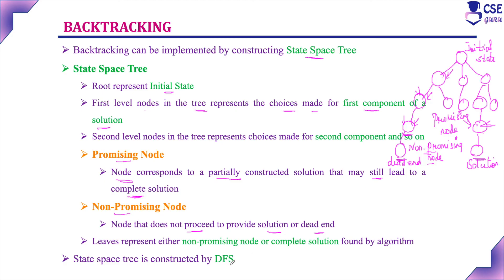The state space tree is constructed using depth-first search, DFS. With the partially constructed solution, it tries to provide the next depth-level node, considering the next level component downward. If it reaches a dead end, it backtracks to the previous level and considers other possibilities. From any node, we consider its next level components; if a dead end is reached, backtrack to the previous level and consider the other possibilities.